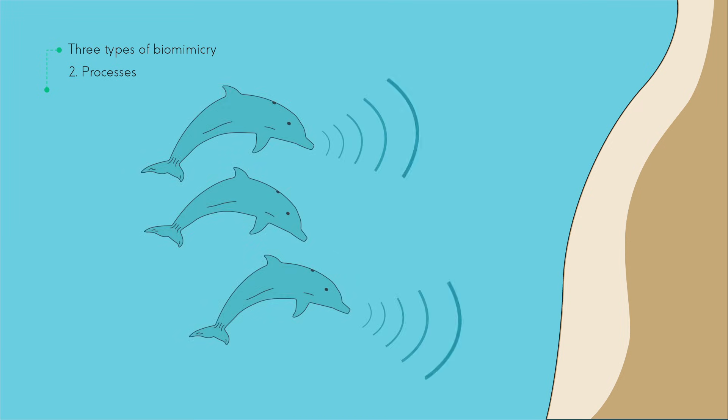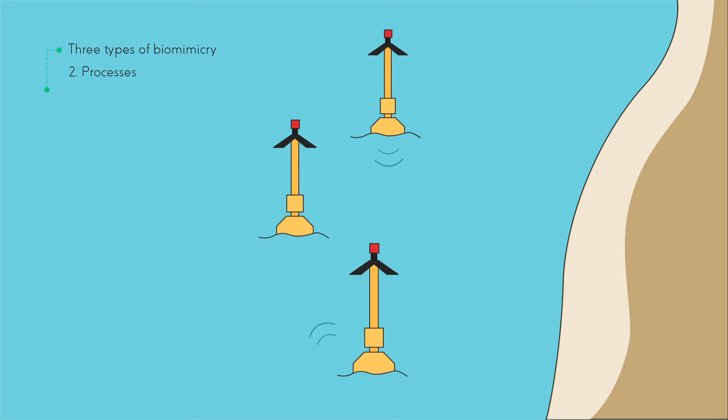Secondly, there would be the imitation of nature's strategies and mechanisms. For instance, dolphins have mastered the art of emitting ultrasound without it interfering between them. A team of researchers has analyzed the way they modulate these frequencies to design a tsunami alert system in the Indian Ocean.